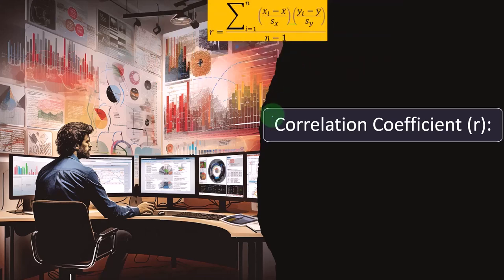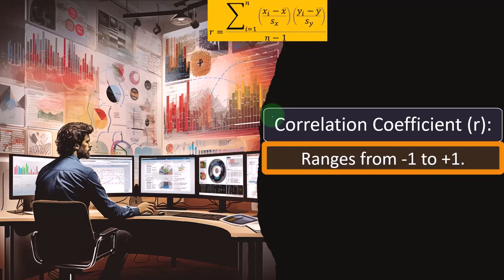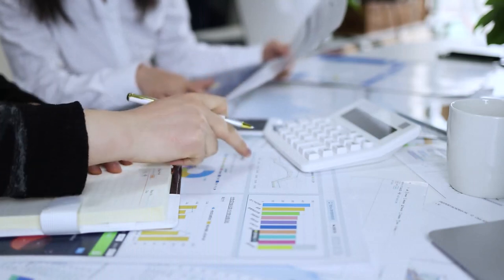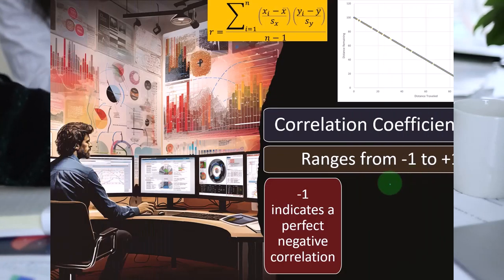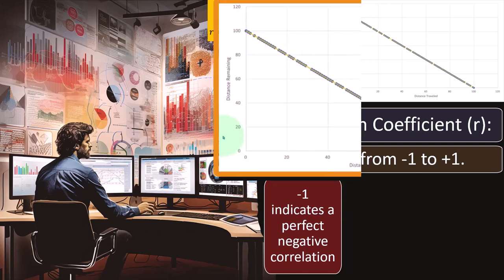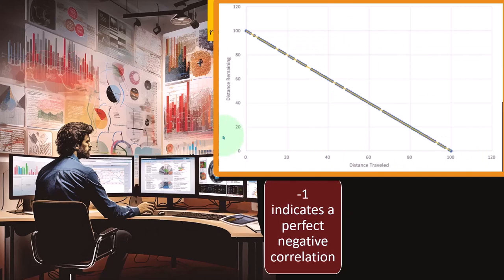This mathematical calculation gives us a range from negative one to positive one. If it were exactly negative one — which isn't likely most of the time — it indicates a perfect negative correlation. We'll do an example of this extreme in our practice problems. One example would be distance traveled versus distance remaining: if you're going on a 100-mile trip and you travel 20 miles, the distance remaining drops from 100 to 80, and so on.